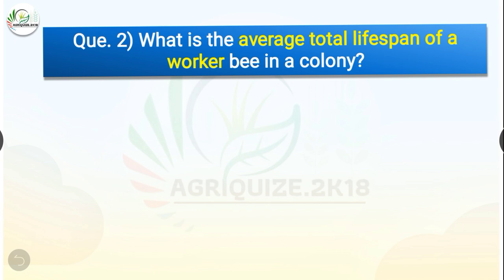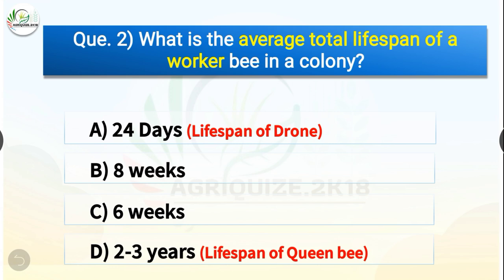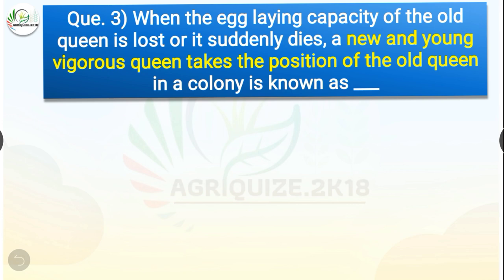Question number two: What is the average total lifespan of a worker bee in a colony? The options are 24 days, eight weeks, six weeks, or two to three years. The correct answer is option C — six weeks. Six weeks is the average total lifespan of a worker bee in a colony, whereas 24 days is the lifespan of a drone and two to three years is the lifespan of a queen bee.